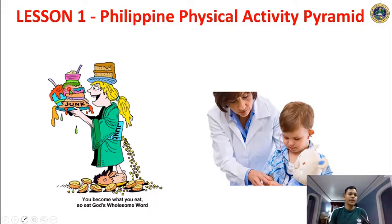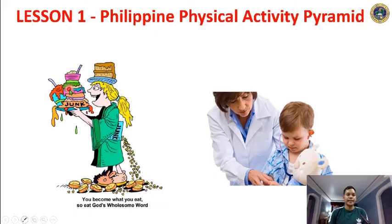We like drinking soft drinks, milk tea, sweets, candies, and chocolates. Sometimes or mostly we neglect healthy foods like fruits and vegetables. We want these kinds of foods because they taste good and are very appetizing, but there is a negative effect on eating these foods, and it causes health problems.